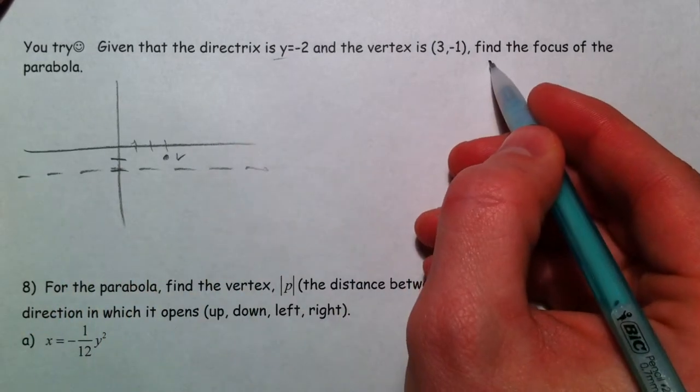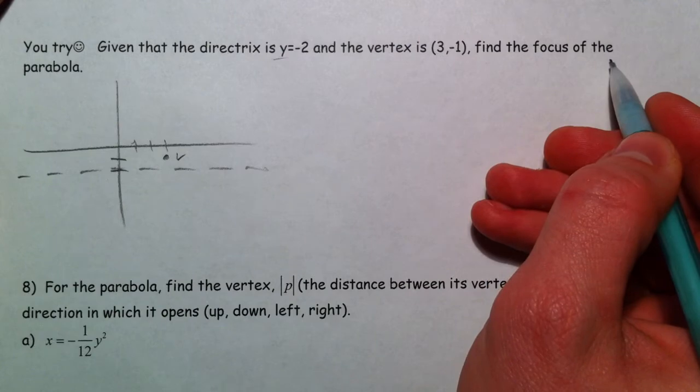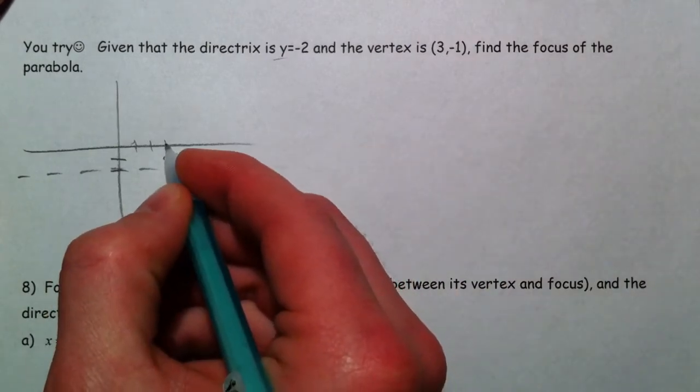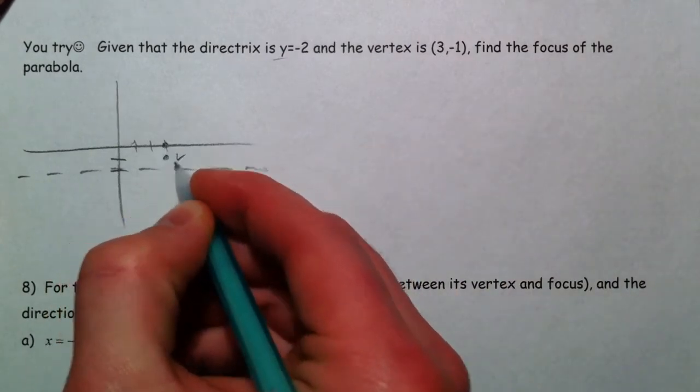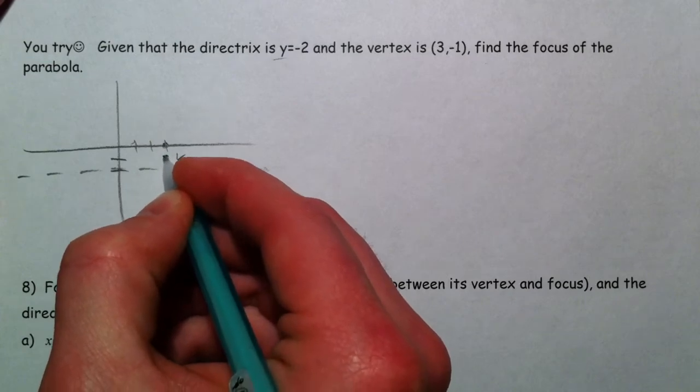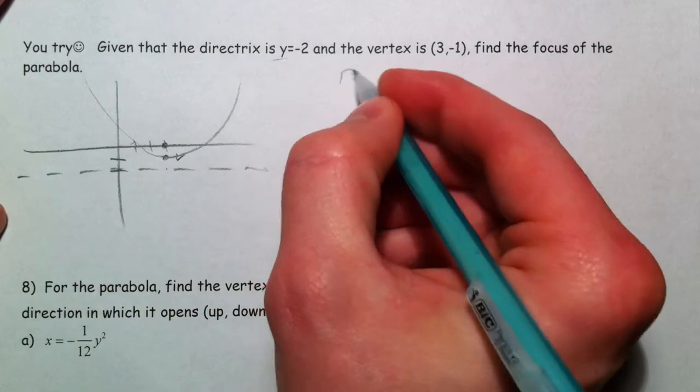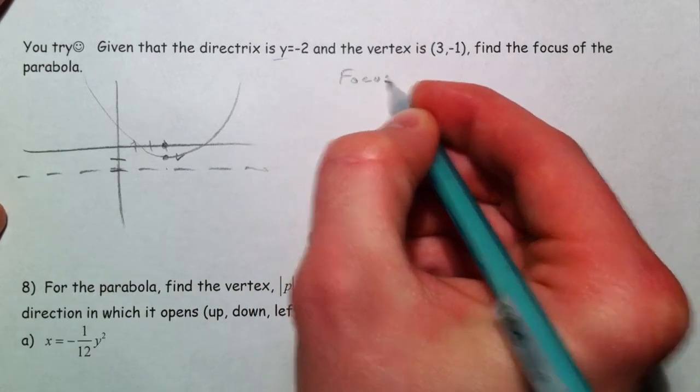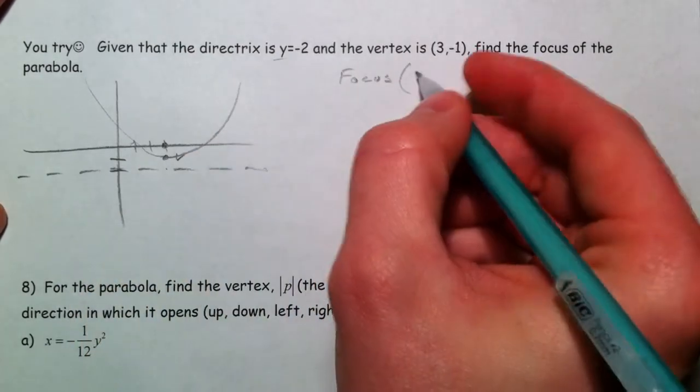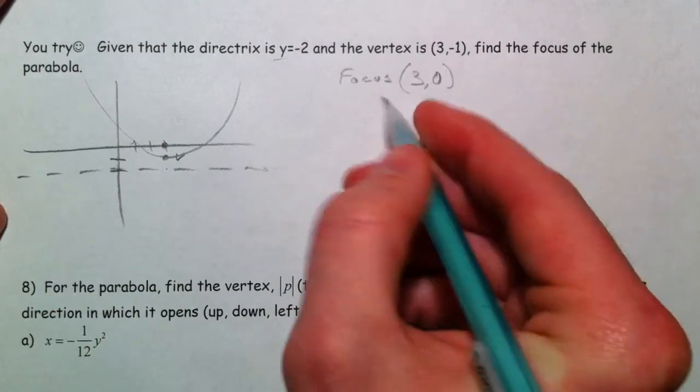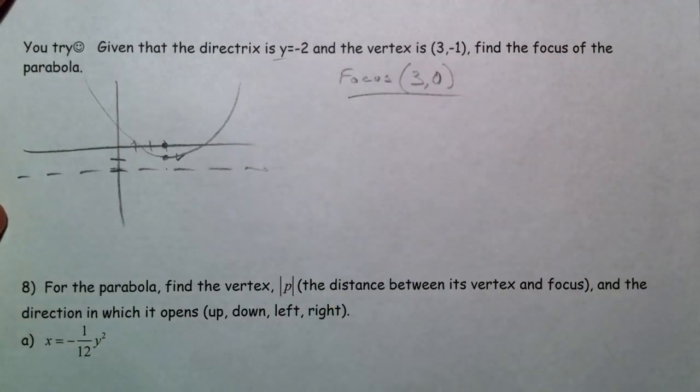It says, find the focus of the parabola. So the focus is going to be right here, because it's the directrix, the vertex, and the focus. So the focus is actually at (3, 0). But, since we just wrote the equation, I want us to practice that again.